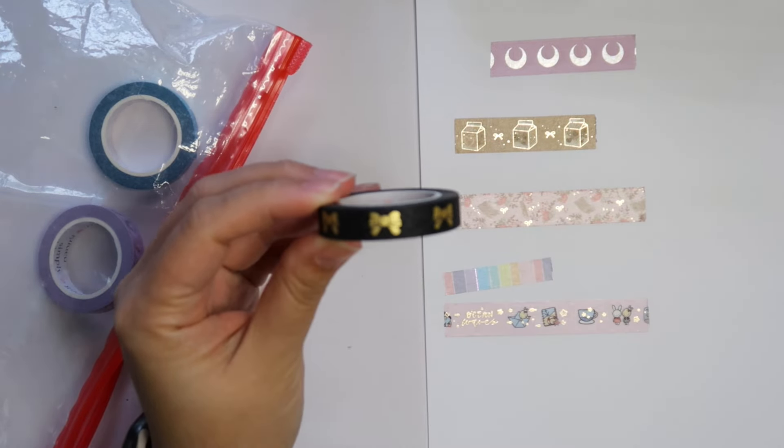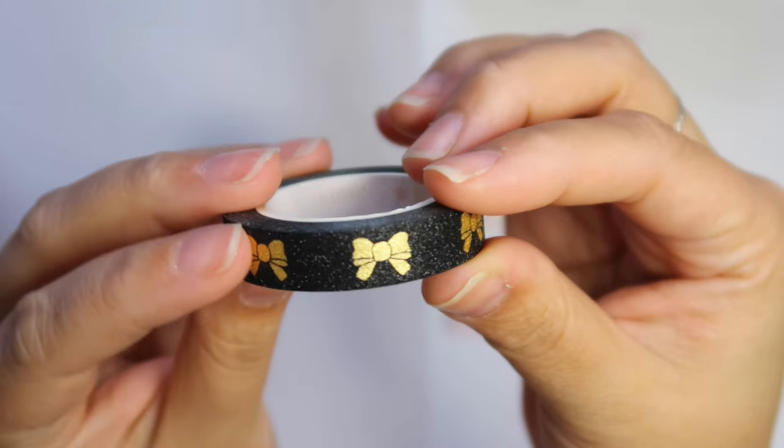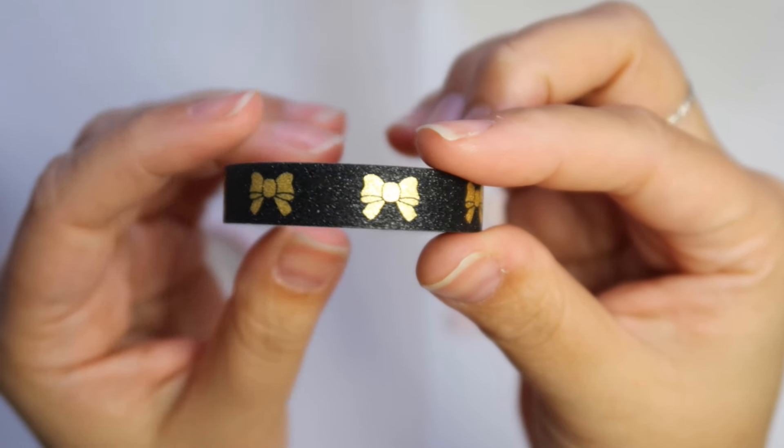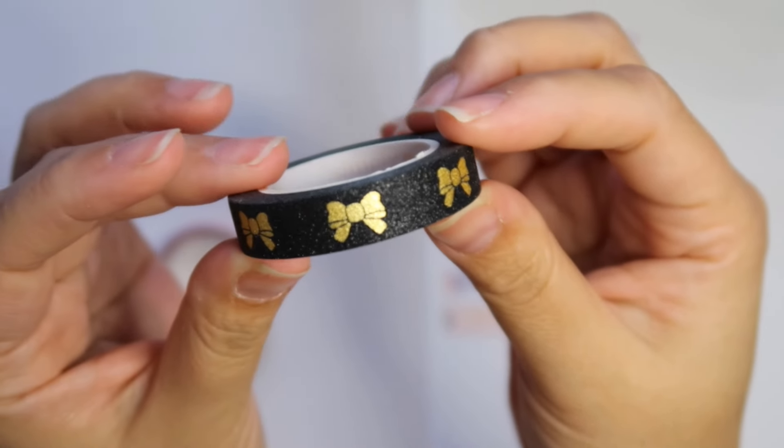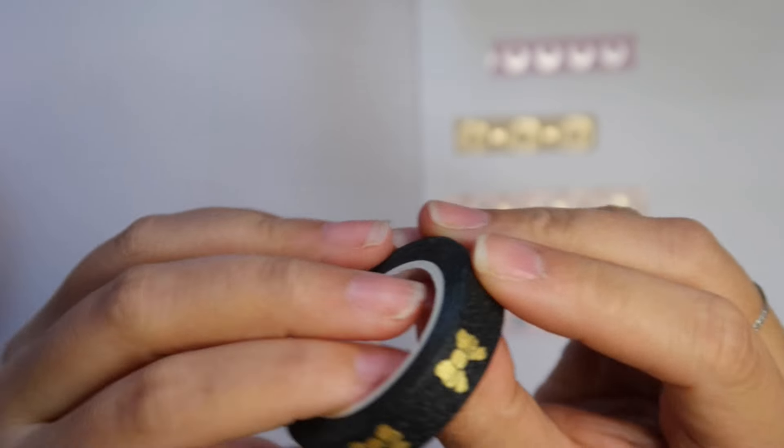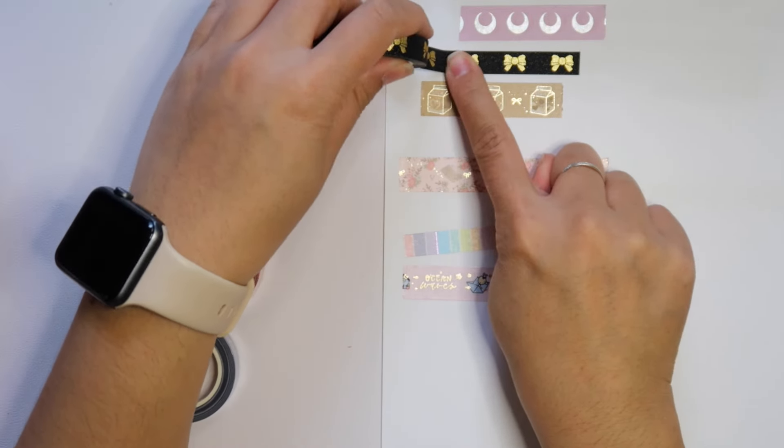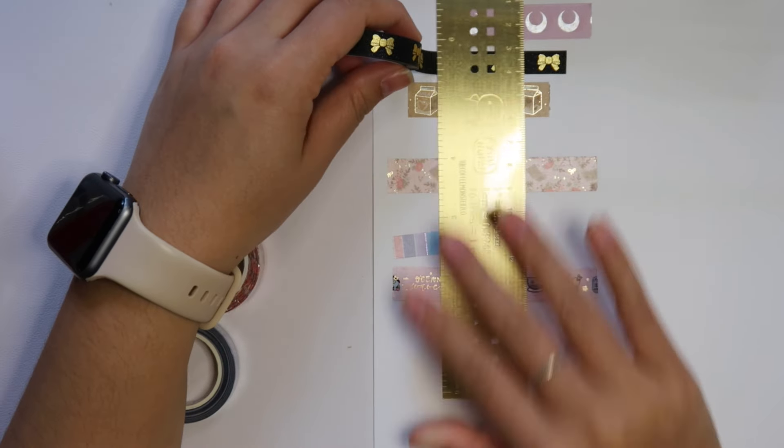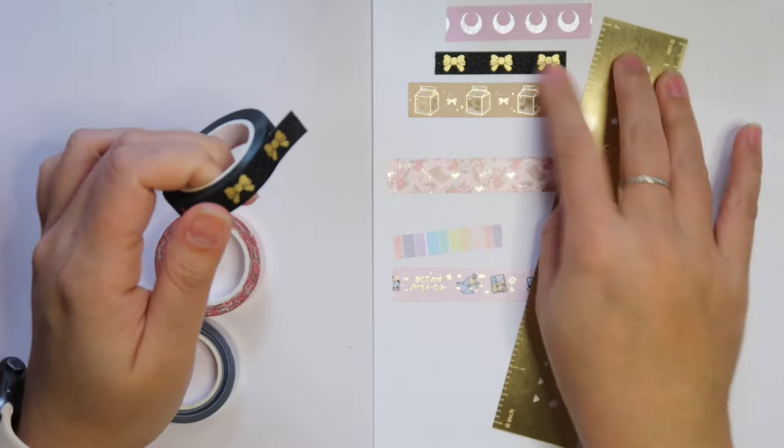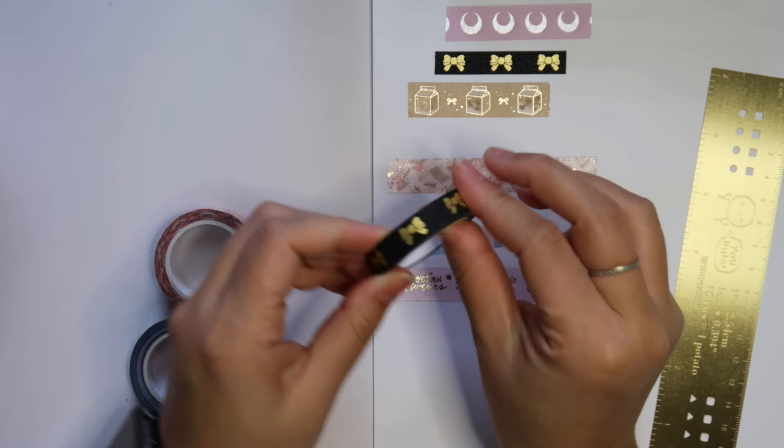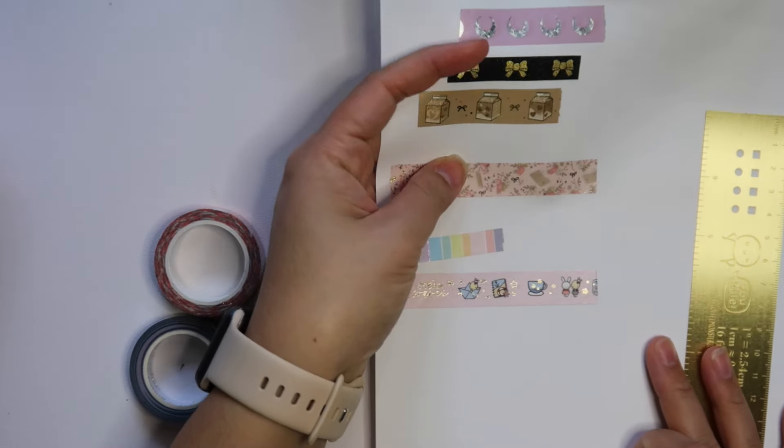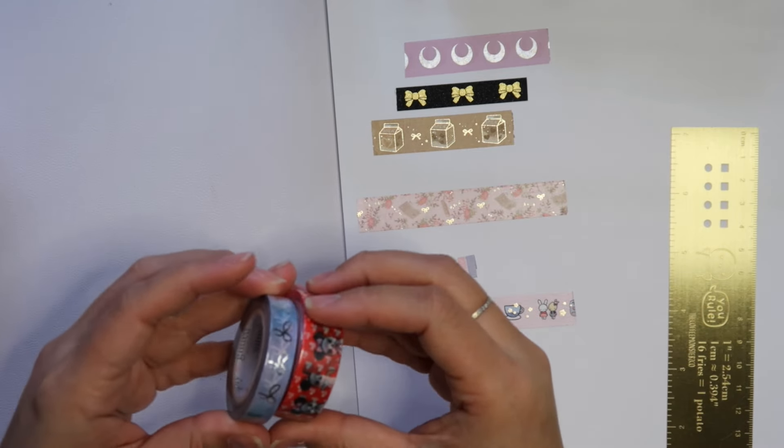Y'all can you see this? This is a pure sparkly black washi tape with gold bows. I've never felt or seen anything like this. We have to swatch this. Oh my gosh. This washi tape is definitely thicker. Oh I can rip it. That is gorgeous. I've never seen anything like this. Keeping that for sure.